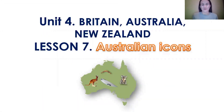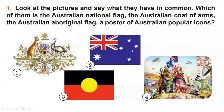Welcome to Unit 4 — Britain, Australia, New Zealand. Today we're dealing with Lesson 7: Australian Icons. We have already touched upon the topic of Australian symbols, haven't we? But today we are going to find out even more interesting things about the country.